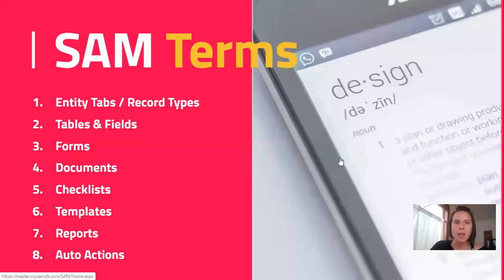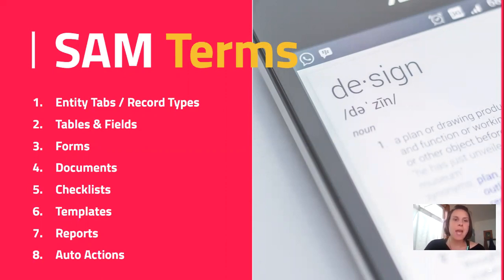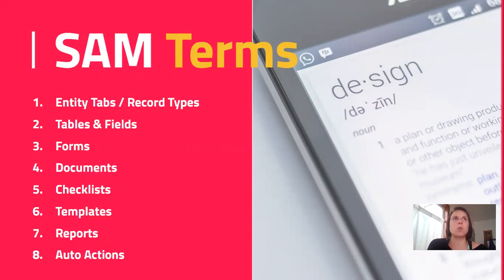First, our SAM terms. Entity tabs and record types are the major colorful tabs at the top of your screen. These are also the main types of records in your system, like children, families, organizations you work with, or people on your team linked to your client records in some way. Tables and fields make up a database — every database in the world is made up of tables and fields, and they show the relationships.